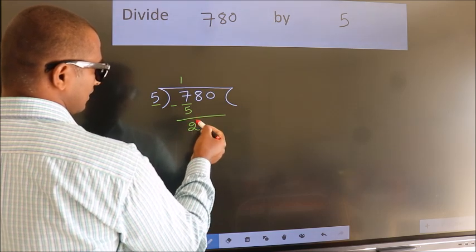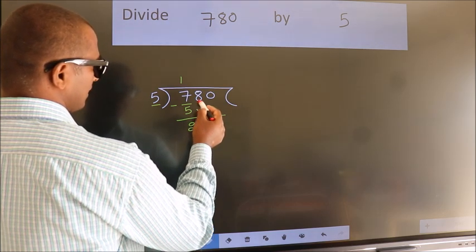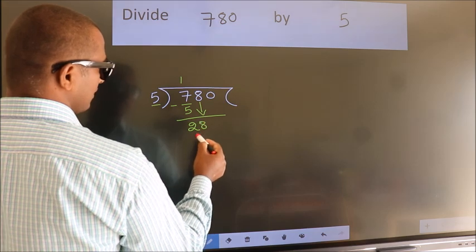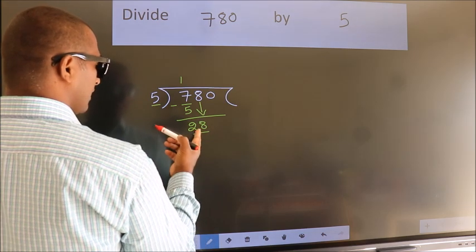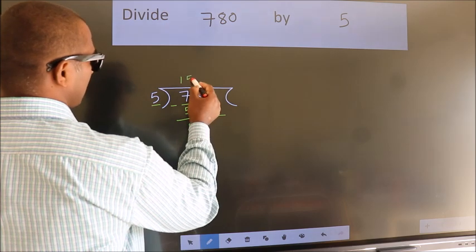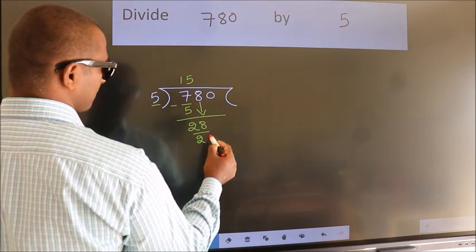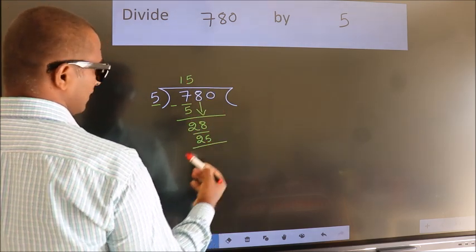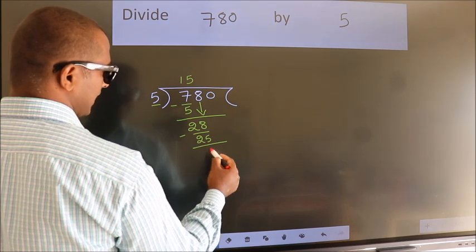After this, bring down the beside number. So, 8 down. So, 28. A number close to 28 in the 5 table is 5 fives, which is 25. Now we subtract. We get 3.